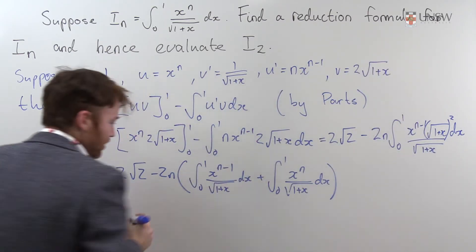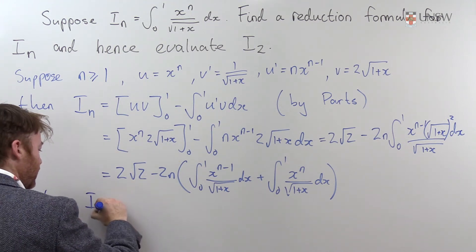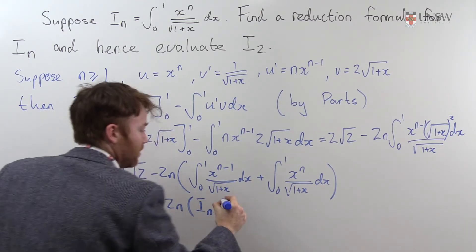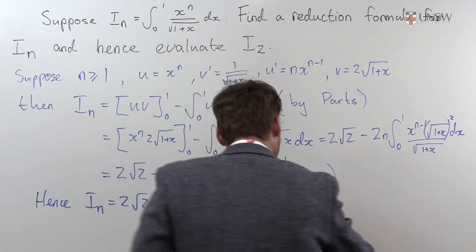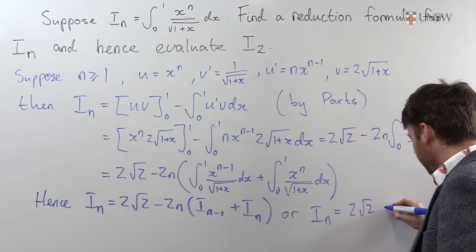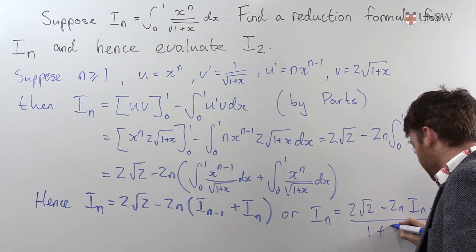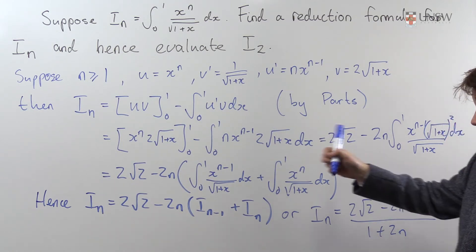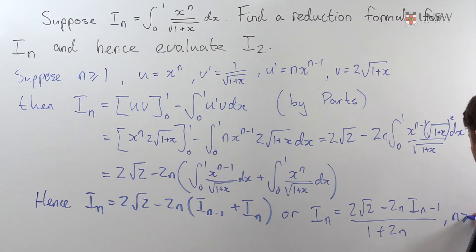Recall this whole expression was equal to In, so we have In in terms of In and In minus 1. Rearranging: In equals 2 root 2 minus 2n times In minus 1, all divided by 1 plus 2n. We have a reduction formula for In, valid for n greater than or equal to 1.